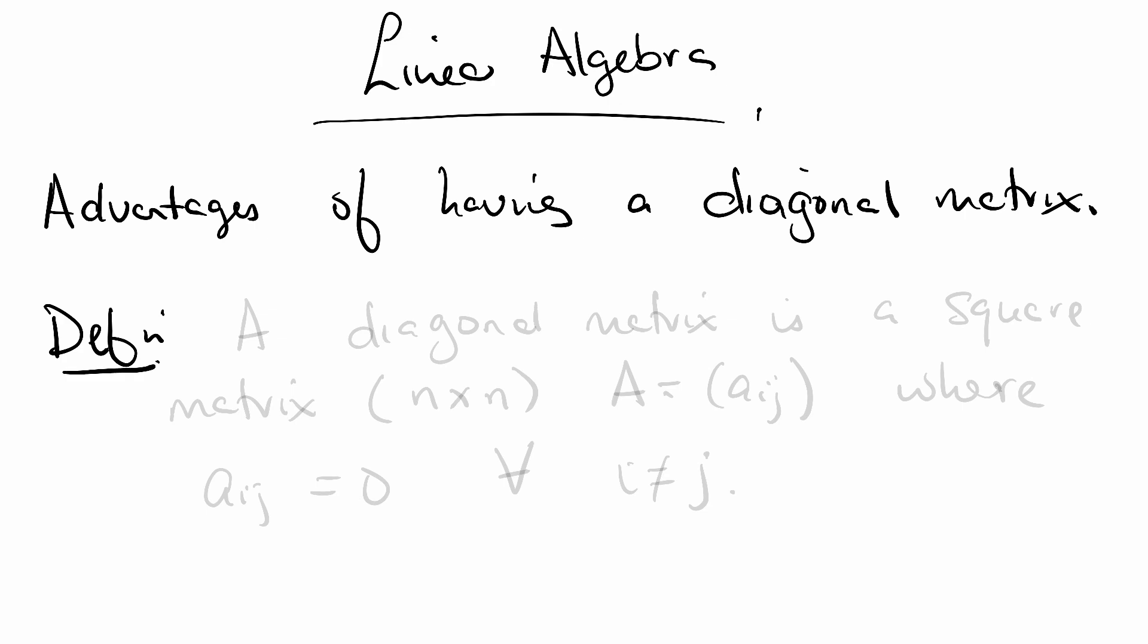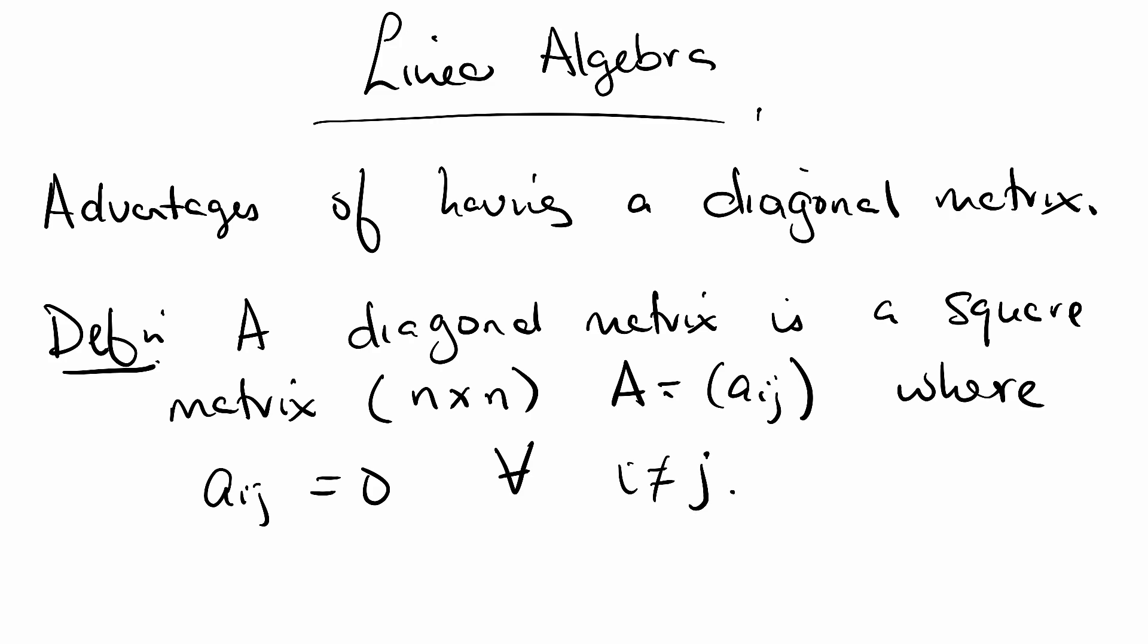Let's start with the definition. A diagonal matrix is a square matrix, the same number of rows as columns. It's a square matrix, let's say A with entries little aij where aij is 0 for all i not equal to j. Said otherwise, the only non-zero entries are along the main diagonal where i is equal to j.